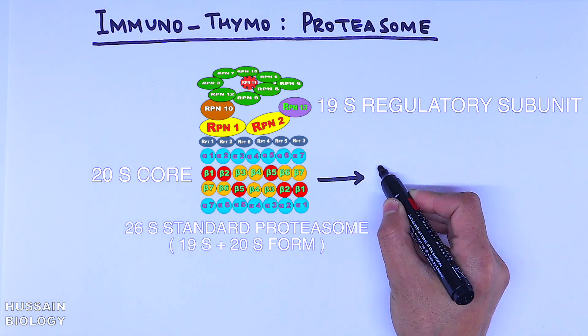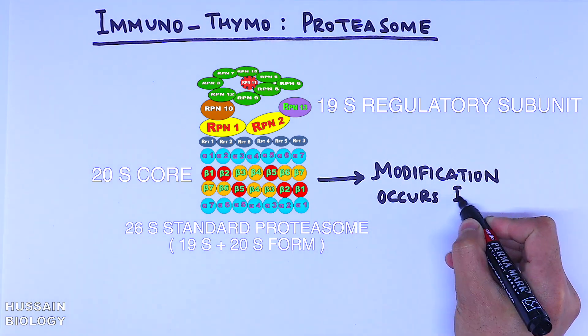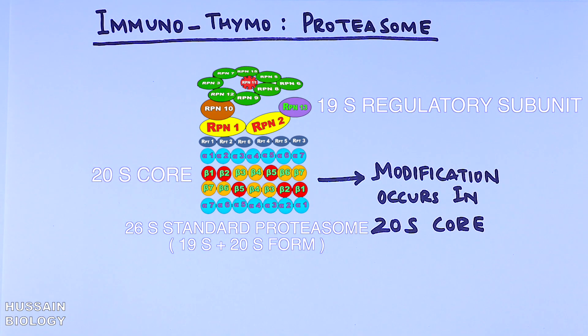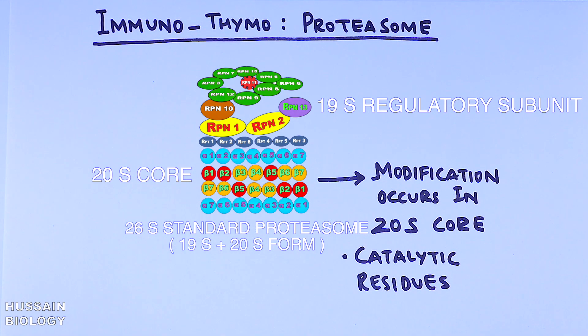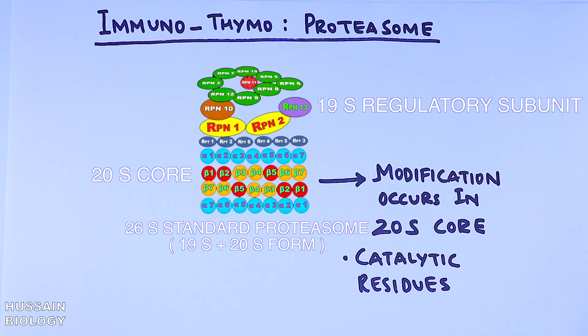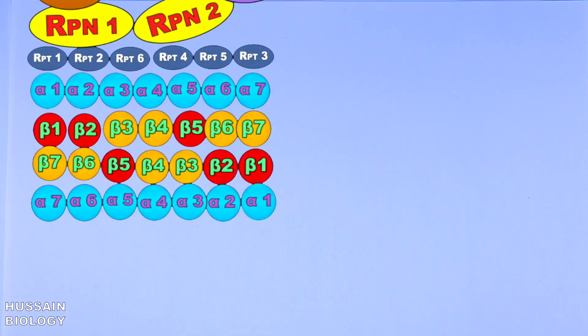The modification occurs in the 20s core beta subunits as depicted in the diagram, and it must be noted that only the catalytic residues of beta subunit rings are modified.